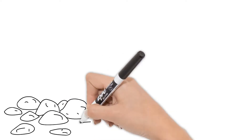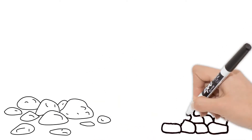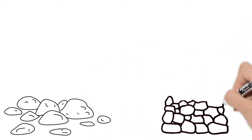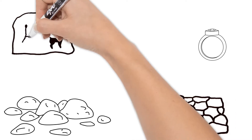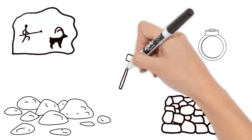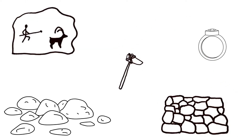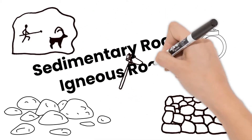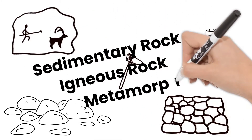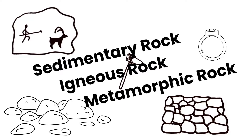Rocks are all around and have lots of uses today as well as in the past. But did you know rocks can be sorted into three main types? These are sedimentary rocks, igneous rocks, and metamorphic rocks. Let's have a closer look at these three types of rocks.